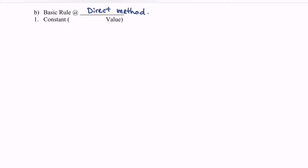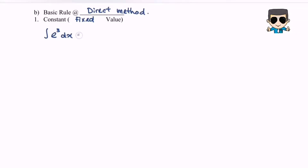Number one, we have the situation which is a constant, or we can say a fixed value. I'm going to have several examples for the constant or fixed value for the basic rule. Here we have the example: integrate e to the power of 3 with respect to x. Now referring to the situation, e to the power of 3 is a constant. If it is a constant, the answer would be e to the power of 3x plus C.